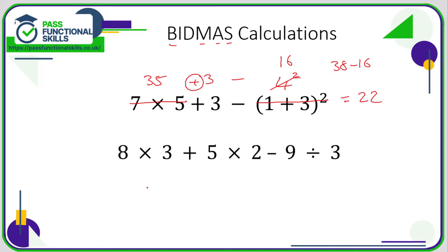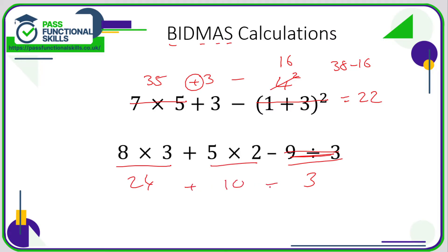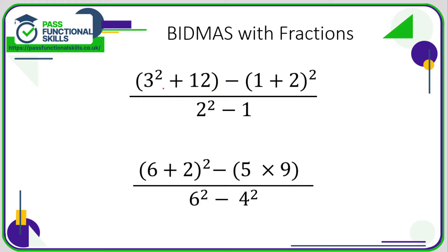In the second example, there are no brackets and no indices, but there is division — nine divided by three is three. We also have multiplying: eight threes are 24, five twos are 10. Now all we've got left is adding and subtracting. We do the adding first: 24 plus 10 is 34, minus three, so the answer is 31.